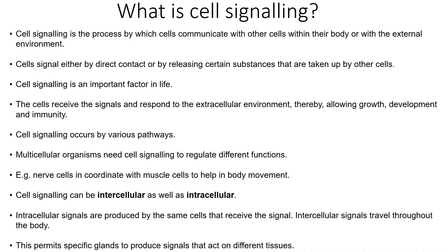Let's focus on what cell signaling is. Cell signaling is the process by which cells communicate with other cells within the body or within the external environment. This can happen via either direct contact or by releasing certain substances which are taken up by other cells. Cells receive signals and can respond to the extracellular environment, which allows growth, development, and immunity. This can occur via various pathways because multicellular organisms require cell signaling to allow different functions.